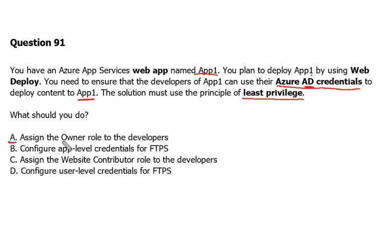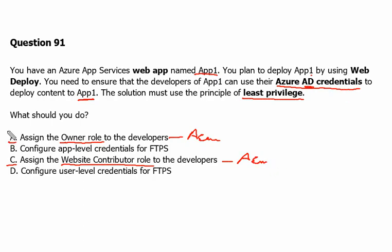Option A is the Owner role assigned to developers. This is an Azure role which can be associated with an Azure Active Directory user. Option C is the Website Contributor role, which is again an Azure role that can be associated with an Azure Active Directory user. Option A and Option C can be our answer for this question because they can be associated with an Azure Active Directory user.